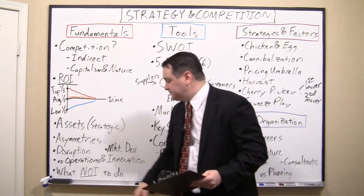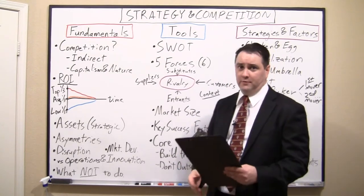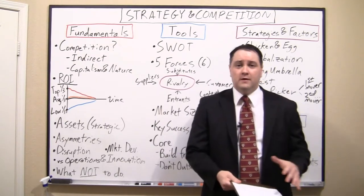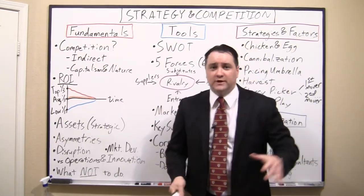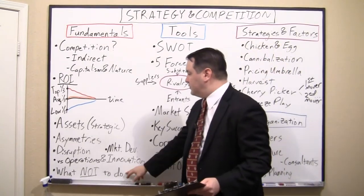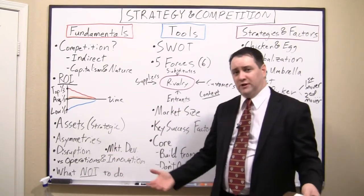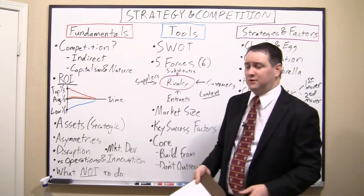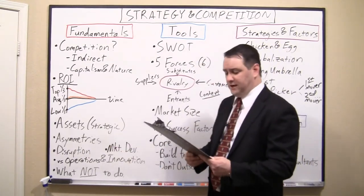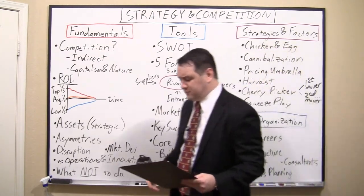The last point I want to talk about in fundamentals is that a lot of strategy isn't about choosing what to do, it's about choosing what not to do. The most common strategic mistake is when there's a large or fast-growing part of your industry and Wall Street says you've got to get into that area. The truth is, if your assets don't play there, you usually end up going in out of shareholder pressure and wasting a lot of money because you don't have a differentiated advantage there. Let's talk about some of the tools we use.